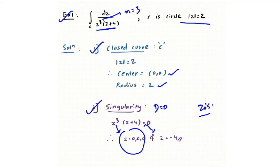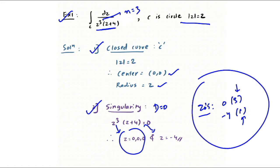The singularity at z = 0 has multiplicity 3, making it a repeated pole. The singularity at z = −4 has multiplicity 1, making it a simple pole. The next step is to check whether each singularity lies inside or outside the closed curve.